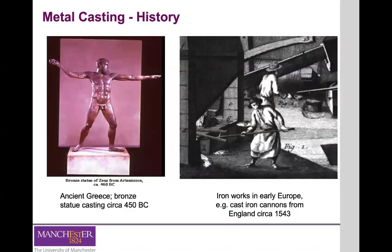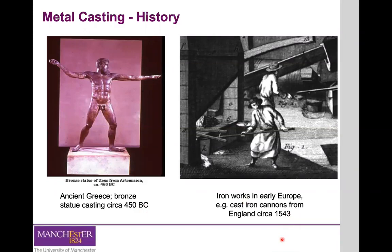In ancient Greece, most bronze statues were actually created using metal casting processes — for example, a statue dating back to 450 BC. More recently, in Europe around the 16th century, all the cannons placed on ships were manufactured using metal casting. As you can see, it's a very simple process that can be used for a wide range of applications and a wide range of metal materials with different properties, making it quite attractive in manufacturing.